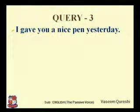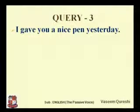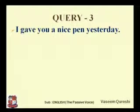Query number three: 'I gave you a nice pen yesterday.' Now you have to change the sentence into passive voice. Who gave you a nice pen? 'I gave you' — 'I' is the subject. What did I do? I gave. So 'gave' is the verb. I gave what? A nice pen. And I gave a nice pen to whom? The answer is 'you'. Here you can find two objects in the sentence.